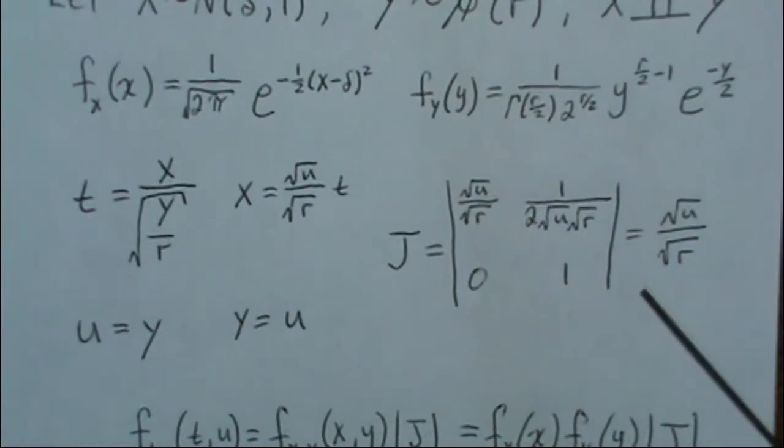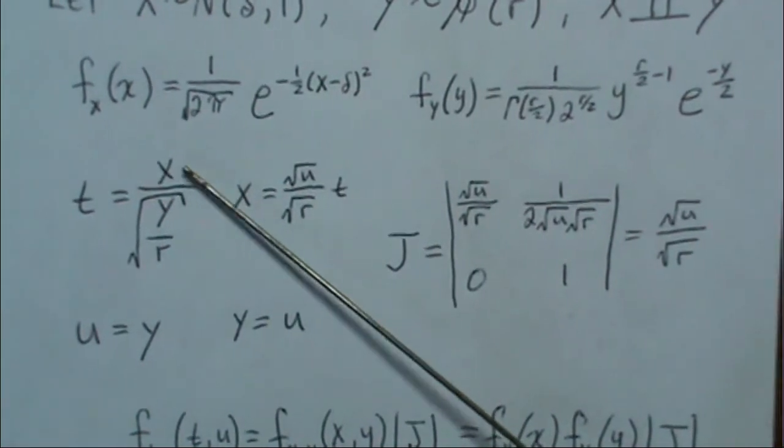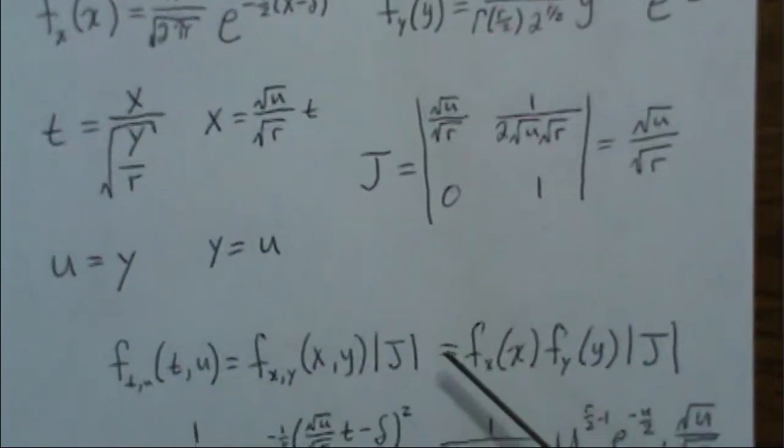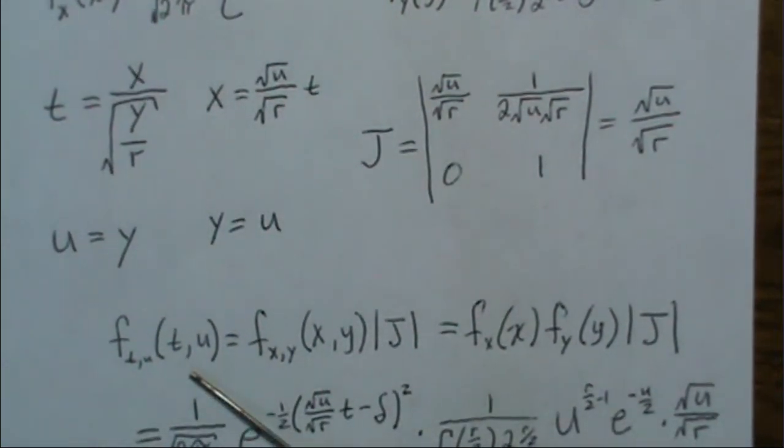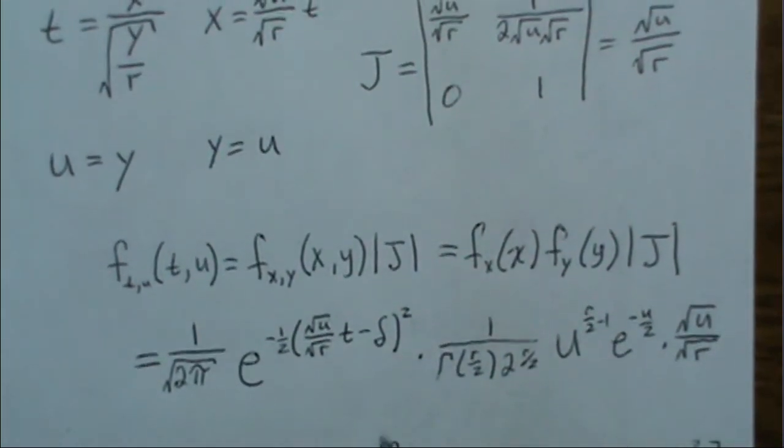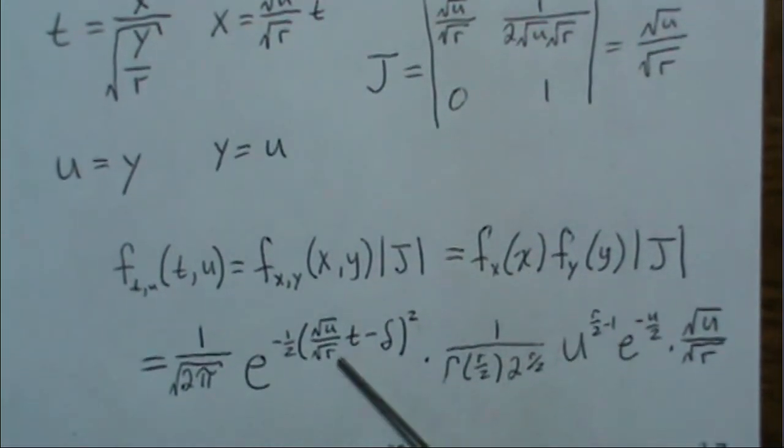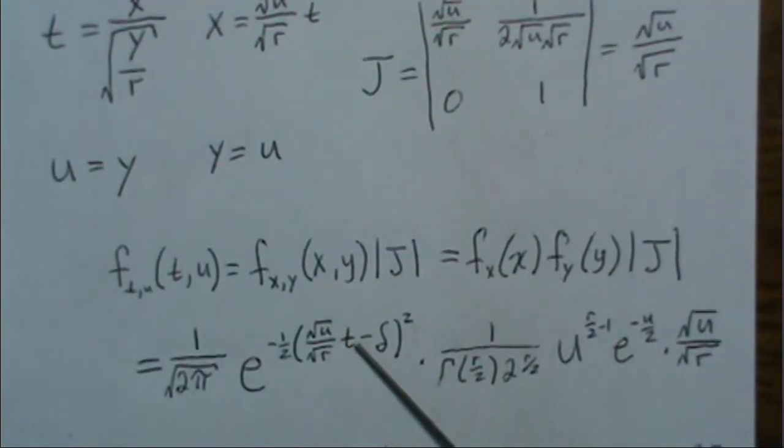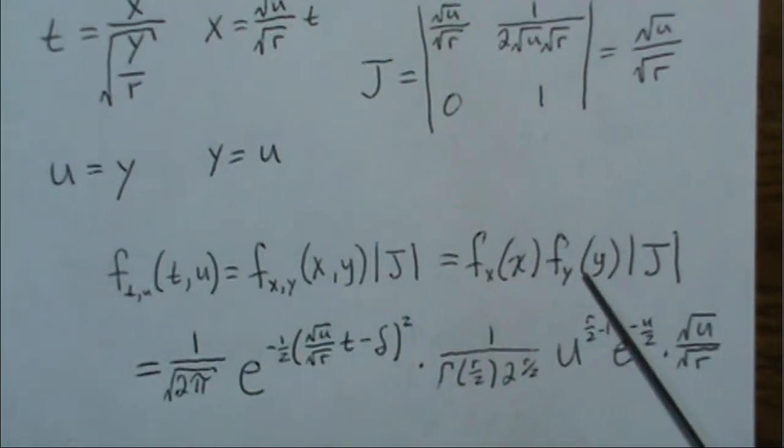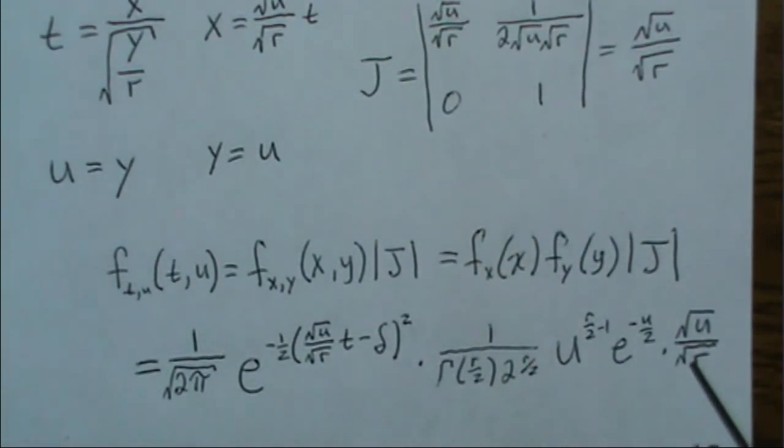We're going to do the same transformation, except for this variable is not a standard normal. It is a normal delta 1 variable. Jacobian is the same. We're going to come up with this joint density and then integrate out u. Well, the joint density is the same here. We plug in x into the normal distribution. So this is x, and then we minus the mean, which we said was delta. So this is a normal distribution. We substitute in y for the chi-squared, and we take it times the absolute value of the Jacobian.